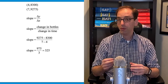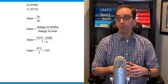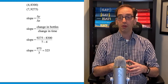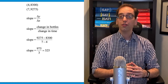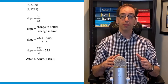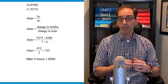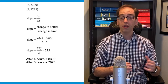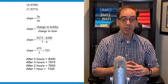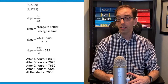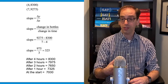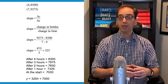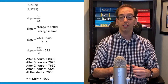To get the full equation we need the y-intercept. Since the company is making 325 bottles each hour, we can work backwards from four hours to the start. At four hours it was 8,300, so subtracting 325 each hour: three hours was 7,975; two hours was 7,650; one hour was 7,325; and at the start was 7,000. So the y-intercept is 7,000, and the full equation is y equals 325h plus 7,000.